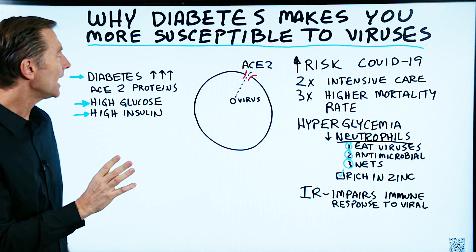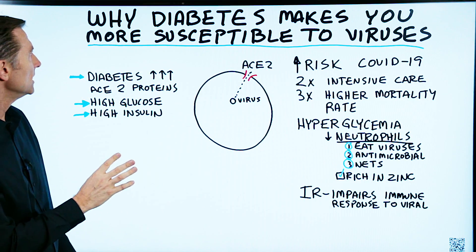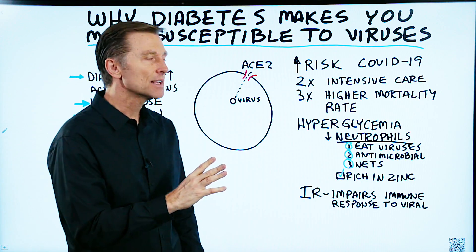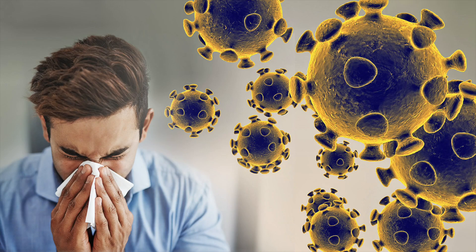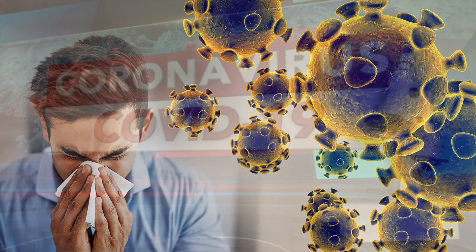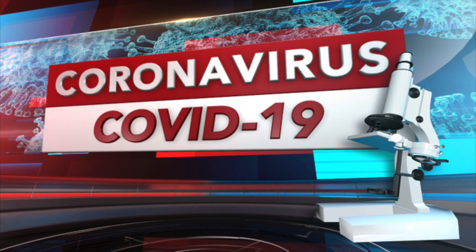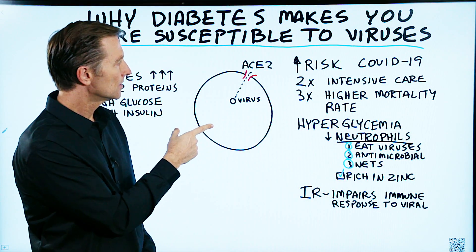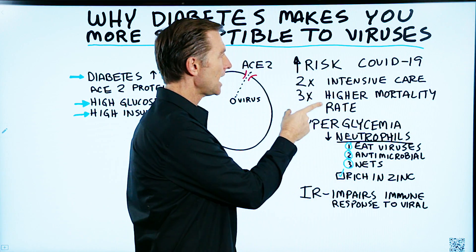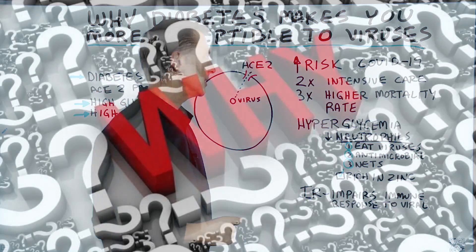Today I want to talk about why diabetes makes you more susceptible to getting viruses, and more specifically, I'm talking about COVID-19. Being a diabetic triples the mortality rate from this virus. But the question is why?